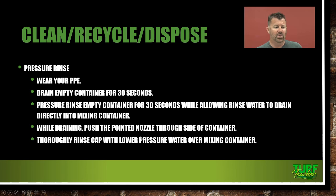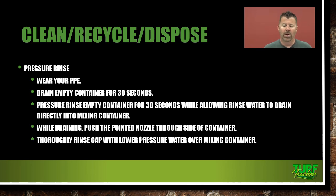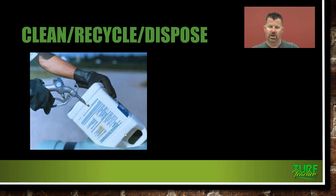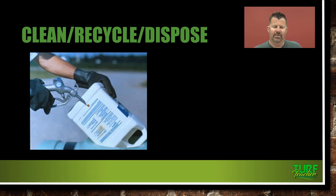When you pressure rinse, wear your PPE. Drain the empty container for 30 seconds, just like in a triple rinse. Pressure rinse the empty container for 30 seconds while allowing the rinse water to drain directly into the mixing container. Push the pointed nozzle through the side of the container and then thoroughly rinse the cap with lower-pressure water over the mixing container. The pesticide container is held into the tank and you're actually puncturing the side with a puncturing nozzle and rinsing it for 30 seconds. This gets all of the pesticide remnants or residue out of that container so we can dispose of it properly.